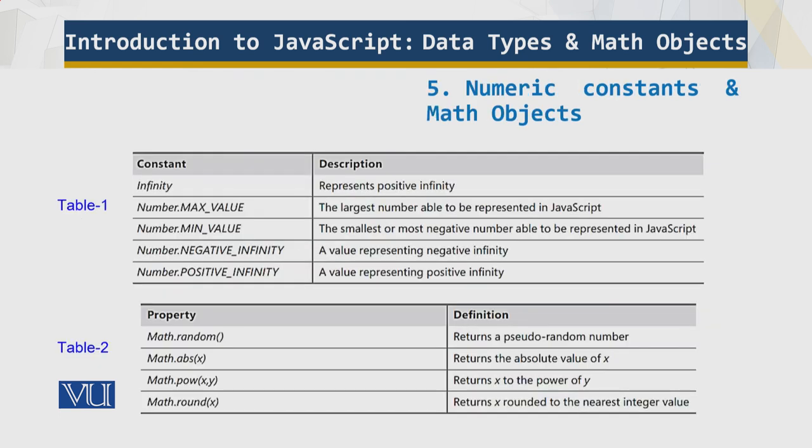So numeric constants and math objects. Table one shows these math objects. This is fairly understandable, max value, min value, negative and so on.